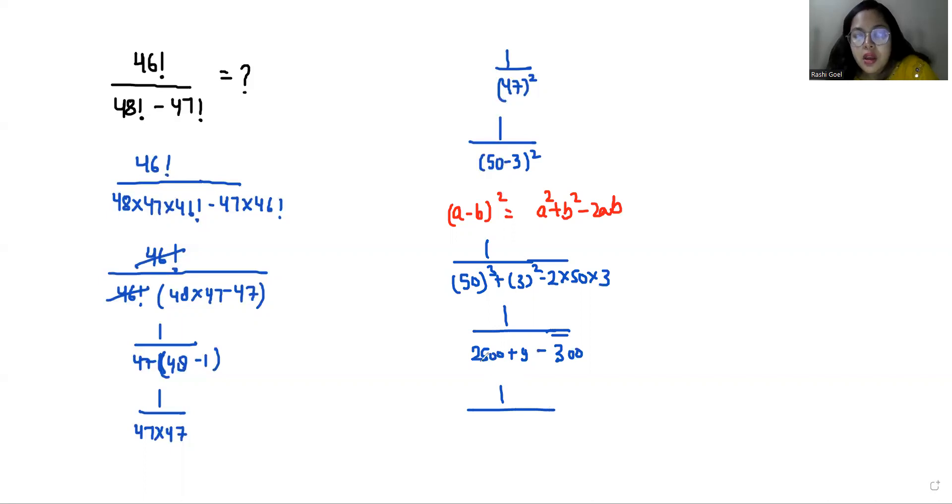So 1 by 2500 minus 300 is 2200 plus 9, which equals 1 by 2209.